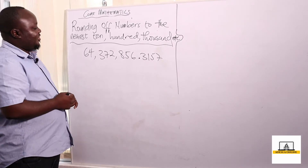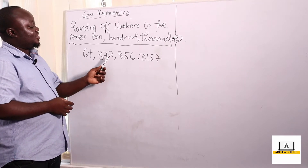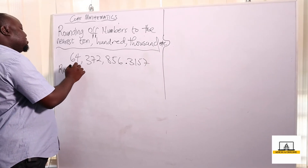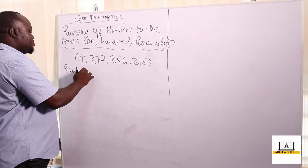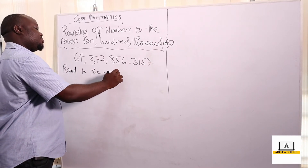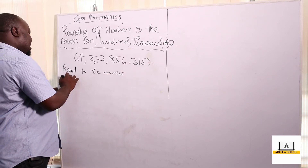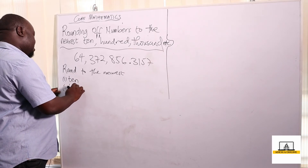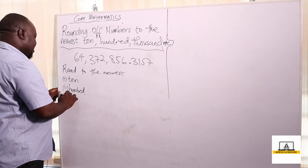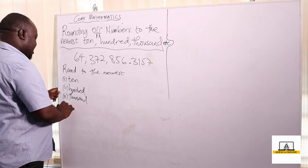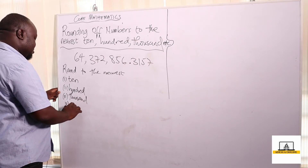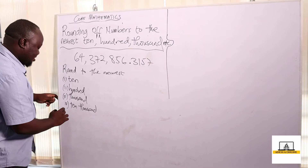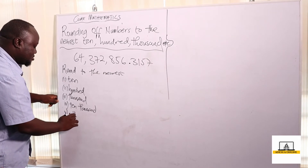So for example, if I have sixty-four million three hundred and seventy-two thousand eight hundred and fifty-six point three one five two, and I want to round this number to the nearest ten, the nearest hundred, the nearest thousand, the nearest ten thousand, or the nearest million — let me work through each of these.